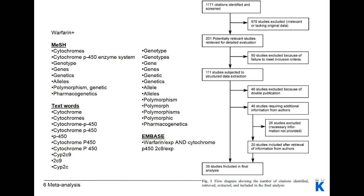Here is an example of a meta-analysis we performed looking at the influence of a specific gene, the CYP2C9 gene, on the dose requirements of warfarin, an anticoagulant drug. To find relevant studies we searched PubMed and Medline, using warfarin as a search term combined with MeSH terms for cytochrome P450 enzymes and genetic variants, as well as text words including polymorphisms, genetics, and alleles. We also searched another database, Embase. When choosing this search strategy, you should aim for sensitivity rather than specificity.